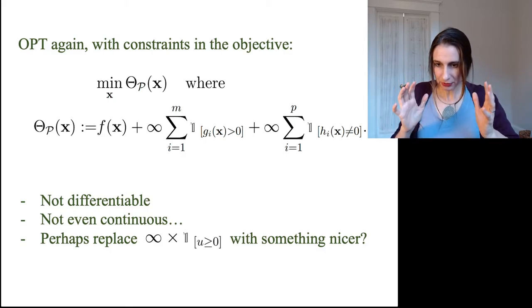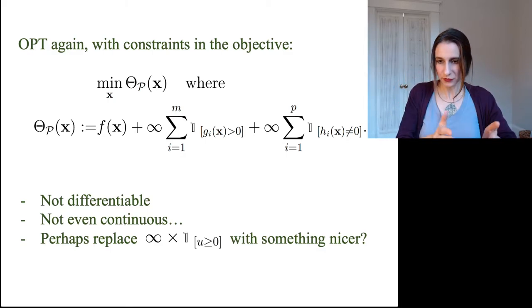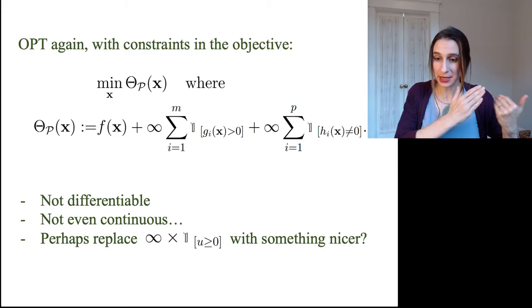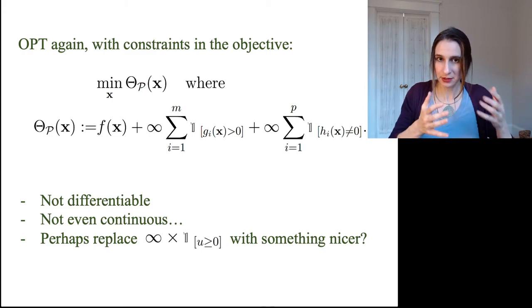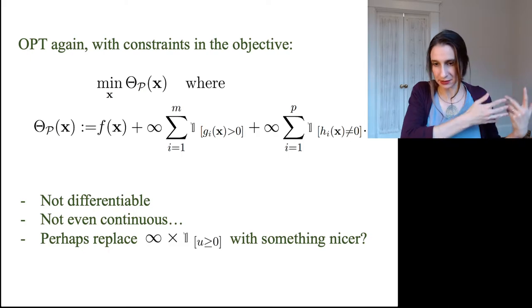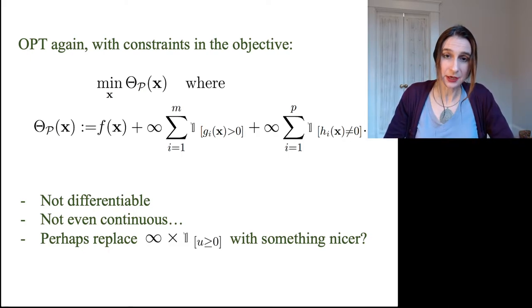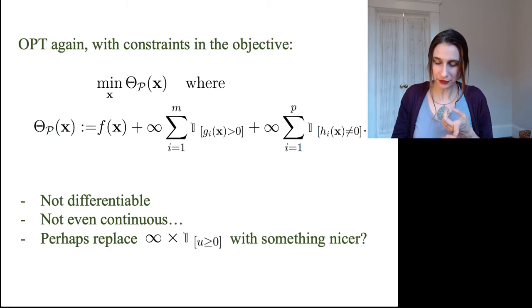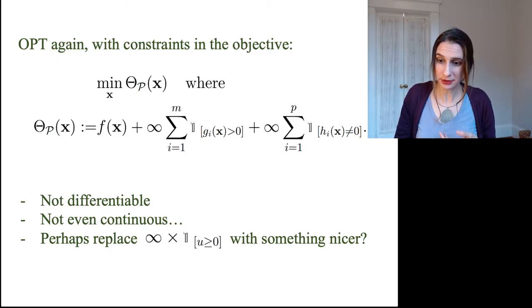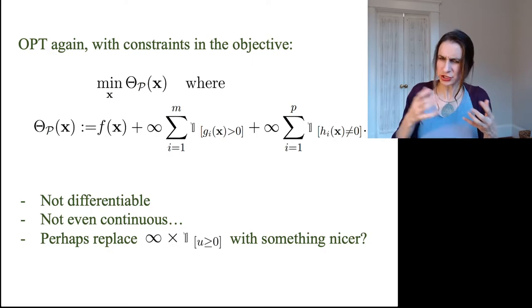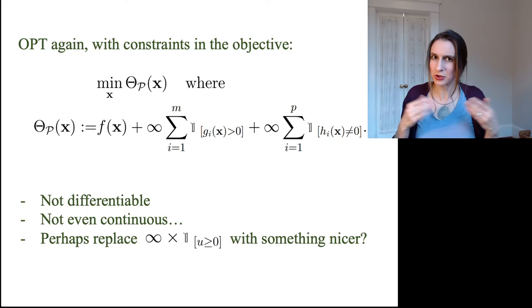Okay, so hopefully you agree with me that this formulation of the problem is the same as on the previous slide, even though we formulated it slightly differently. Now, this objective function is not differentiable. It's not even continuous. And so we might consider trying to replace these functions that are infinity sometimes and zero other times